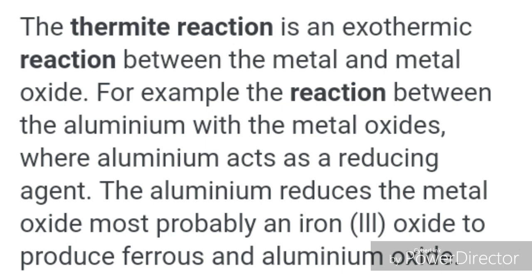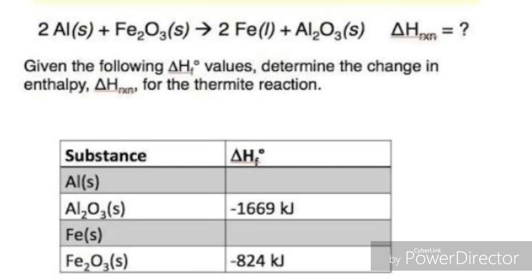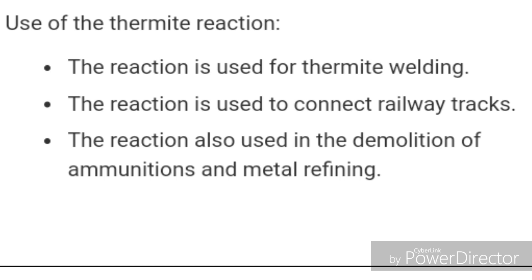In this reaction, iron oxide is actually ferric oxide. Remember: iron has two valences — plus two (ferrous, lower valence) and plus three (ferric, higher valence). The chemical reaction: aluminum metal reacts with ferric oxide to form iron metal and aluminum oxide. This is a displacement reaction.